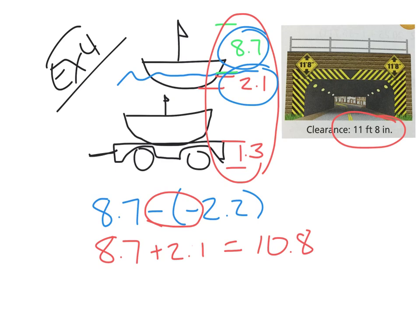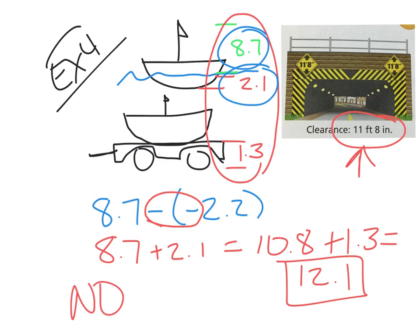Now, how tall is the trailer? 1.3. So, plus 1.3. What's 10.8 plus 1.3? 11.11. No, 12.1. So, 12.1. So, is that going to be bigger than 11.8? Should the boat go under this bridge? No. No. He is not going to fit. Well, let's see if we put the sail down. Well, let's see that. Yeah, they could if it was. See, some of the boats don't have a sail. That's just the only one I know how to draw. So, it could have taken off the cabin roof. Alright, for number 10, we are going to use this example. So, I'm going to leave it on this screen for just a second.